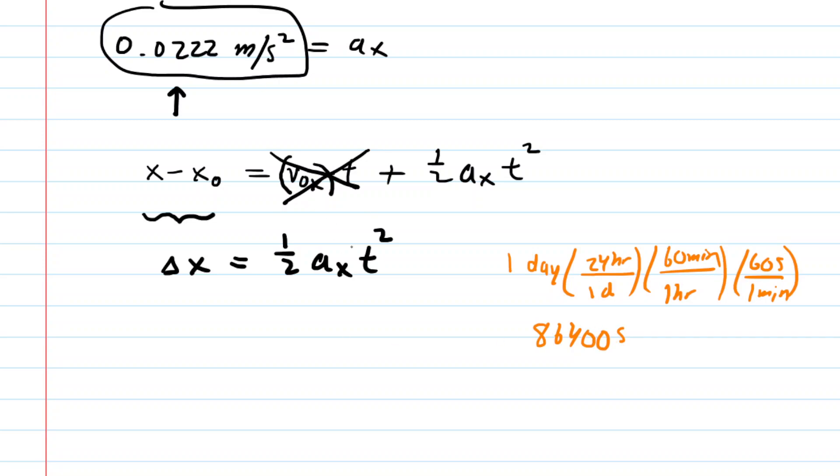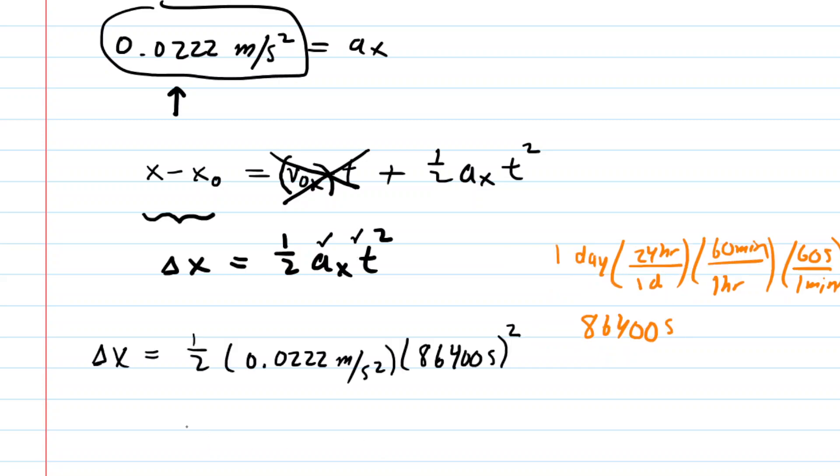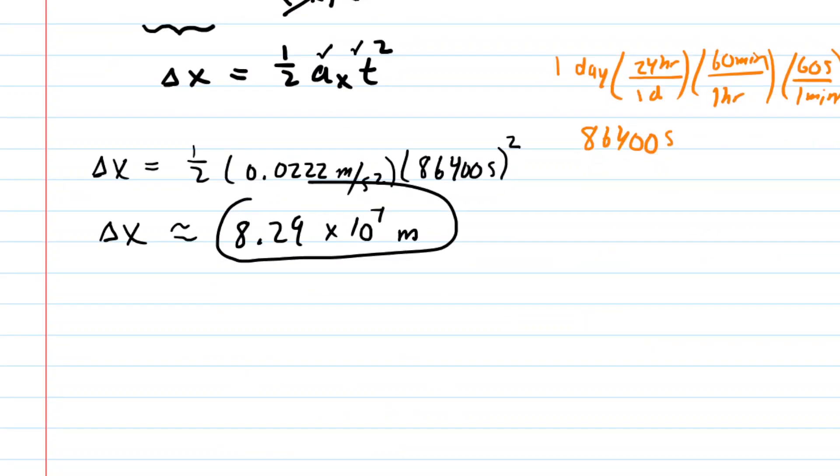Let's plug in the known acceleration and the time we just calculated. The answer is approximately 8.29 times 10 to the power of 7 meters, since we calculated a delta X or distance. That's the correct answer to Part B.